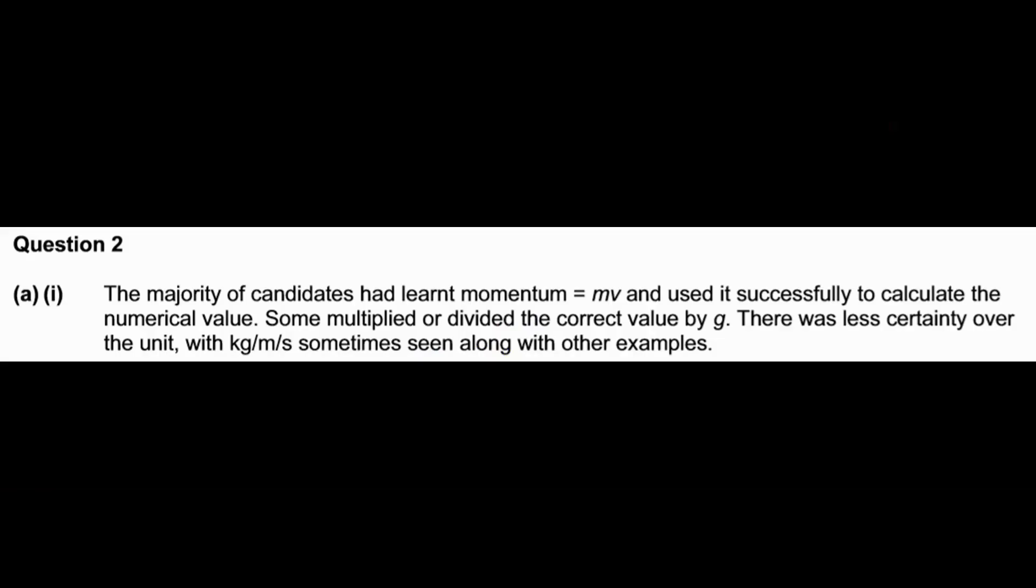For Question 2 A(i), the examiner report said the majority of candidates had learned momentum equals mass times velocity and used it successfully to calculate the numerical value. Some multiplied or divided the correct value by g. There was less certainty over the unit, with kg·m·m·s sometimes seen along with other examples.